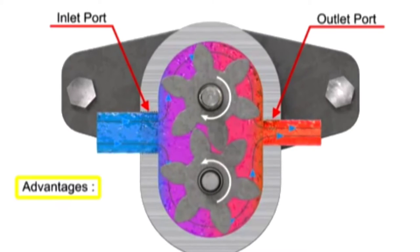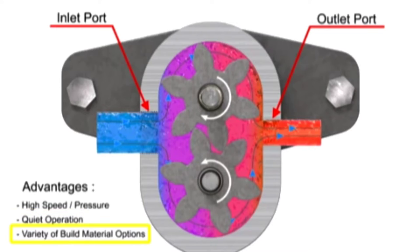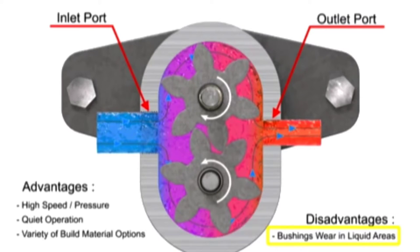The advantages of external gear pumps are their high speed and pressure, relatively quiet operation, and that their design accommodates a wide variety of materials. Disadvantages include bushings in the liquid area can become worn and that they have fixed end clearances.